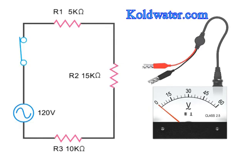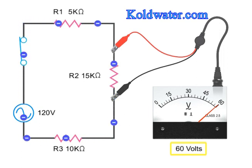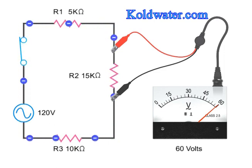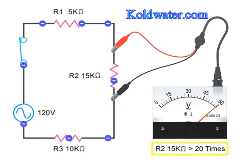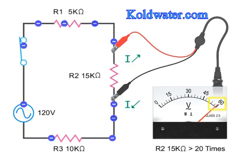A voltmeter is used to measure a potential voltage difference across two points in a circuit. To measure voltage in a circuit, the meter is connected in parallel with the components to be measured. To accurately measure voltage, it's important that the meter have a negligible impact on the circuit being measured. Therefore, voltmeters have a high internal resistance to prevent current from flowing through the meter. Connecting them to a component will not affect the voltage being measured. If the voltmeter's internal resistance is less than 20 times the component's resistance, current will flow out of the circuit into the meter, resulting in an inaccurate voltage reading.